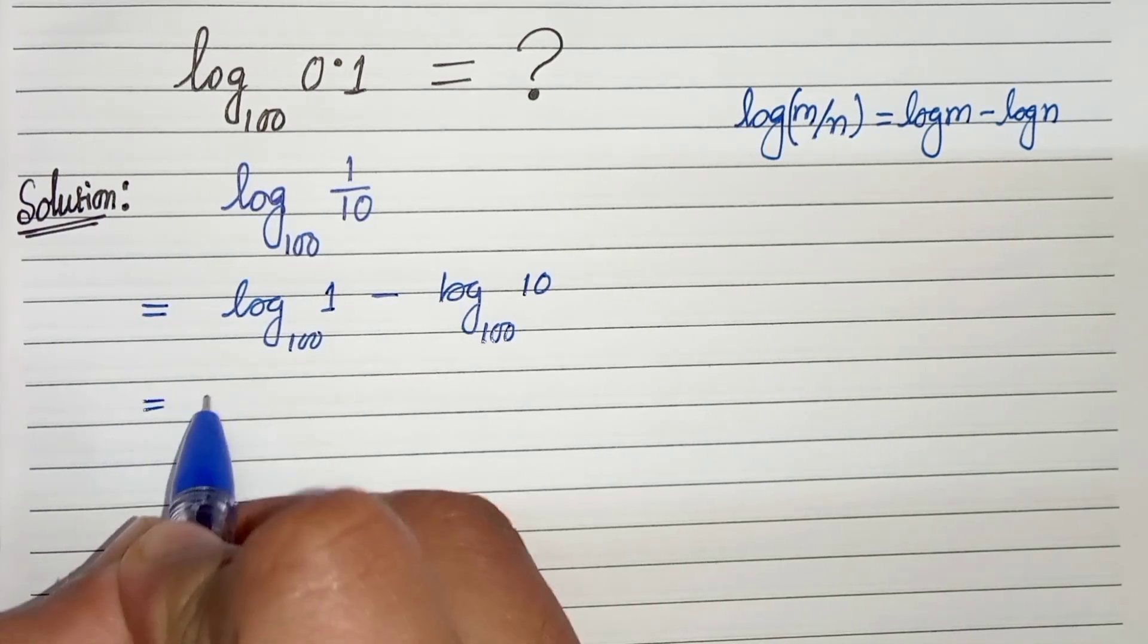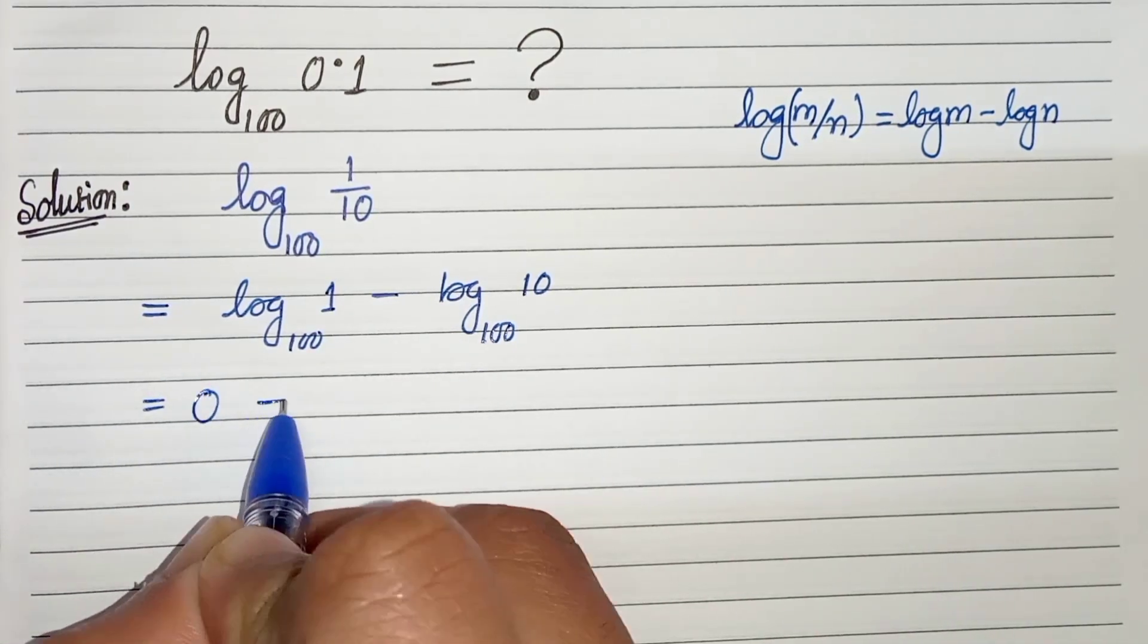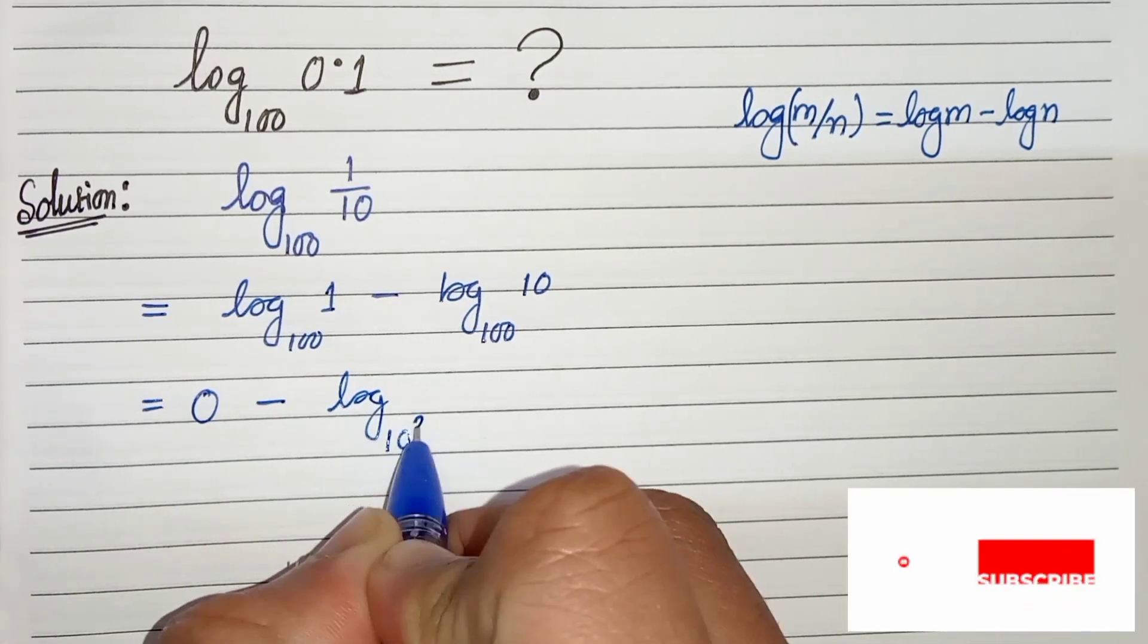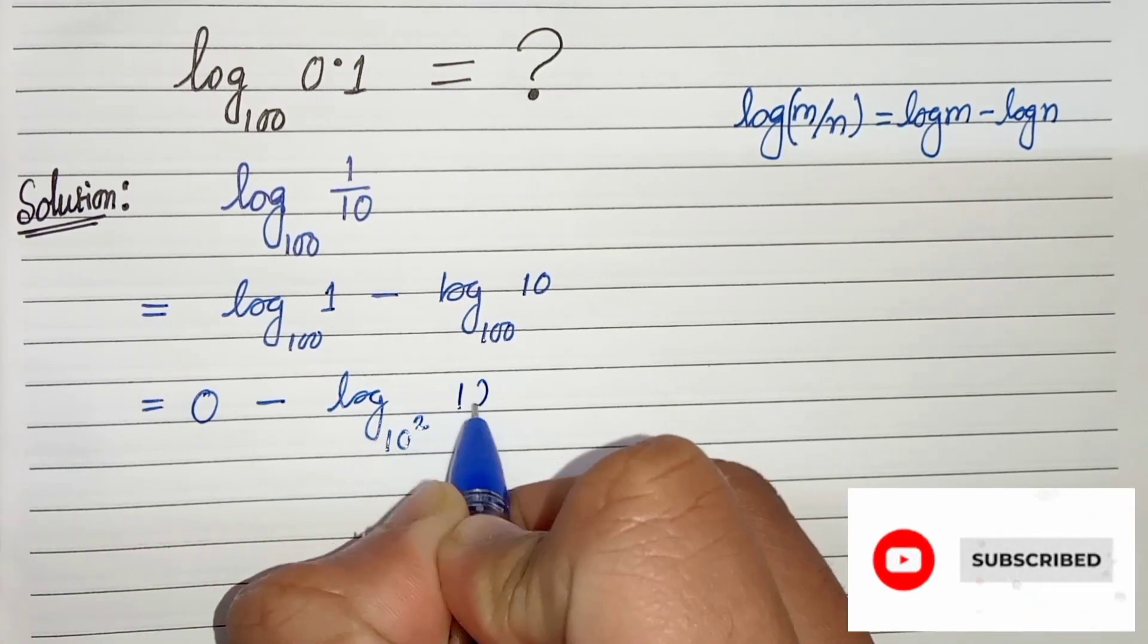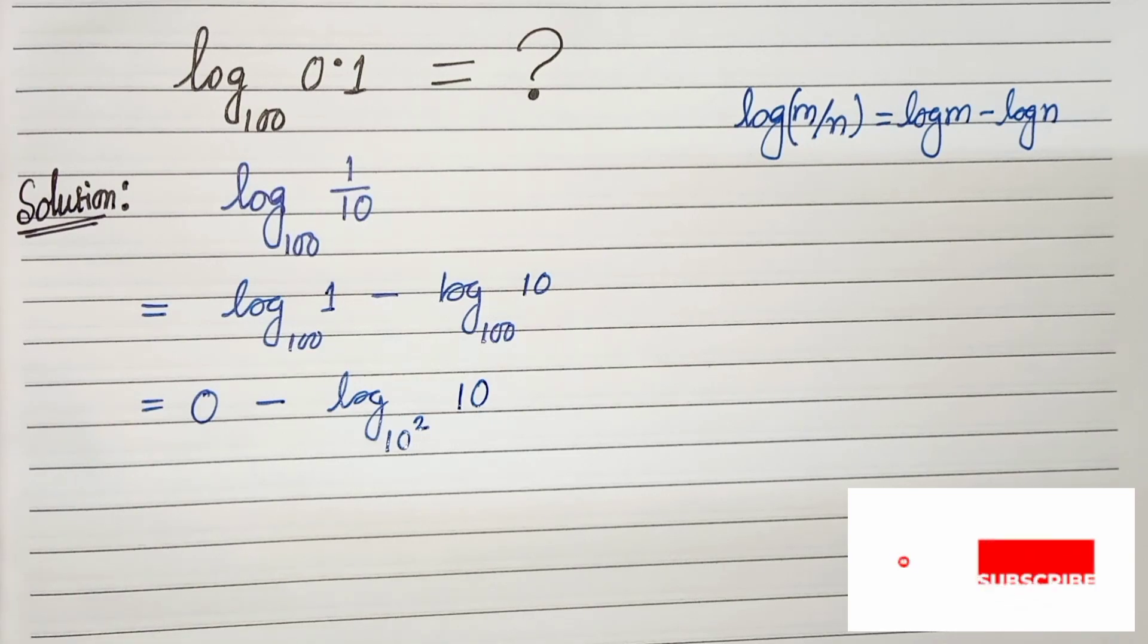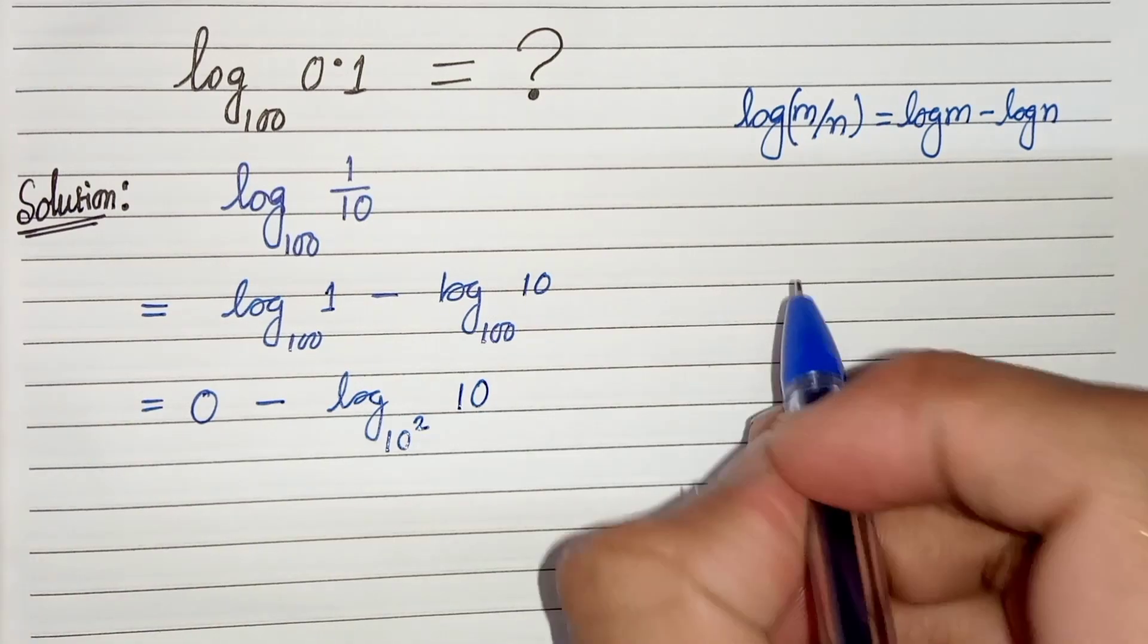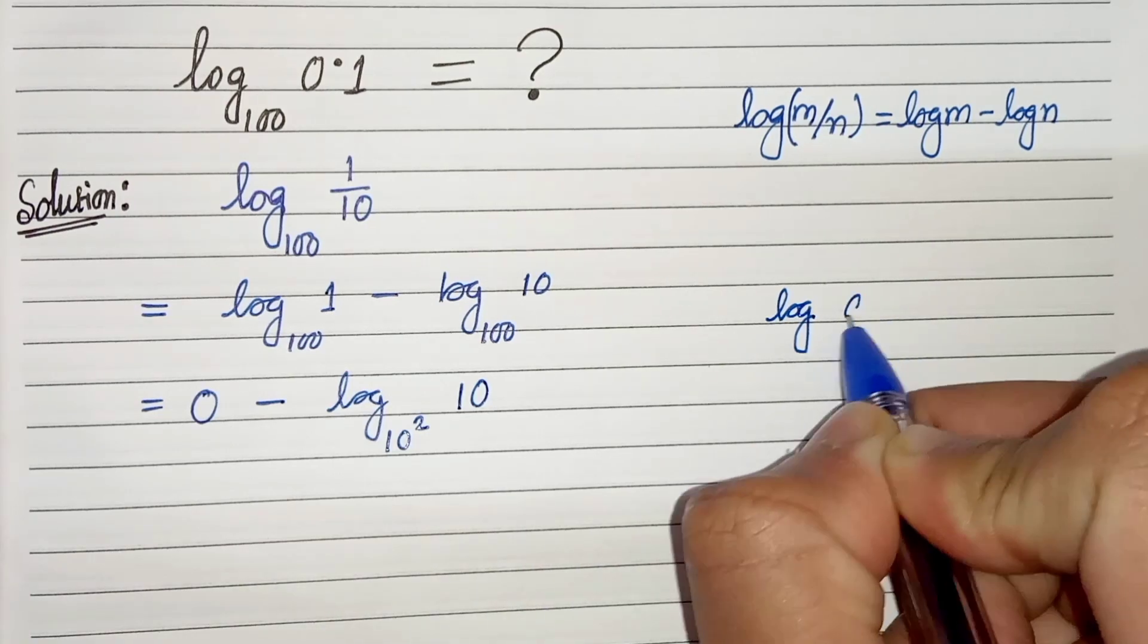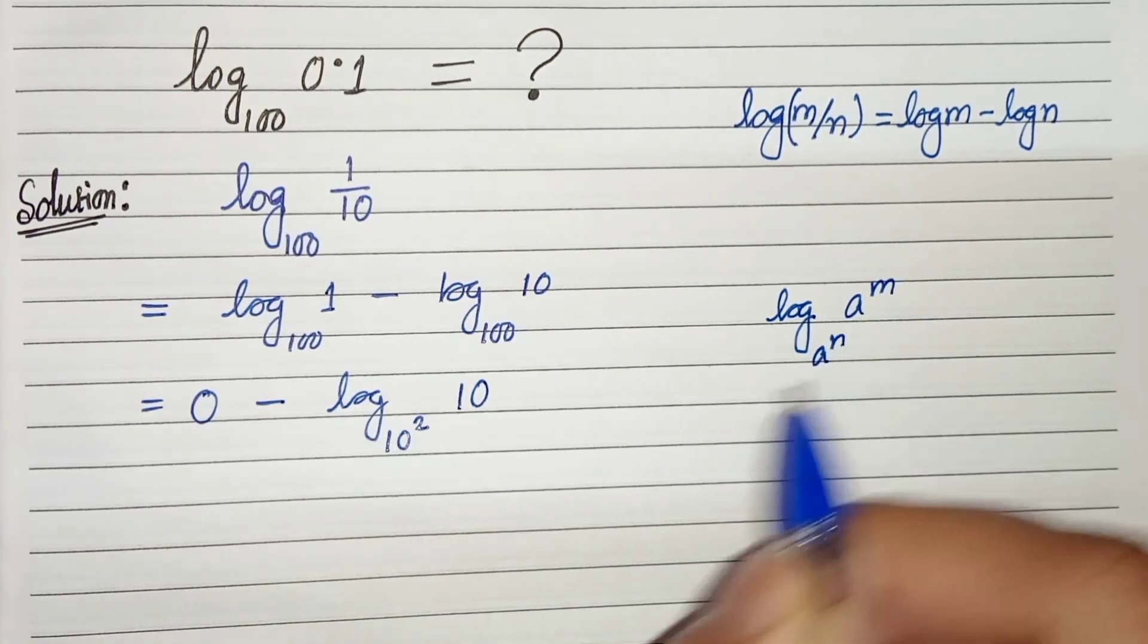And again we know that log of a to the power m to the base a to the power n can be written as m by n log of a base a. So let's apply this here.